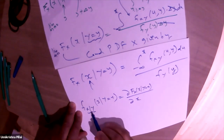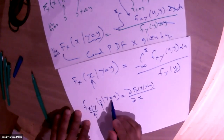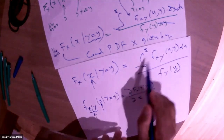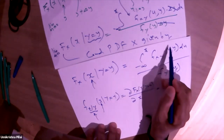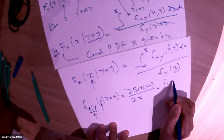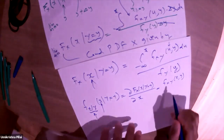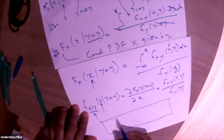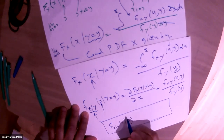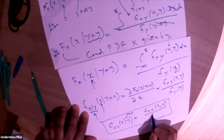The conditional distribution of X given Y = y is: F_{X|Y}(x|y) = ∫_{−∞}^{x} f_{XY}(u, y) du / f_Y(y). Taking the derivative with respect to x gives the conditional density function: f_{X|Y}(x|y) = f_{XY}(x, y) / f_Y(y). We can verify this is a legitimate density function — integrating it over all x gives f_Y(y)/f_Y(y) = 1.